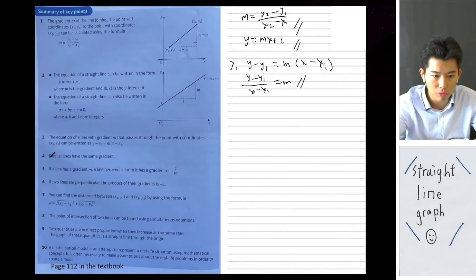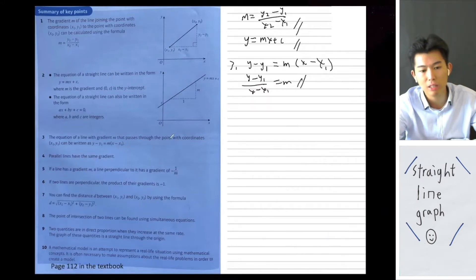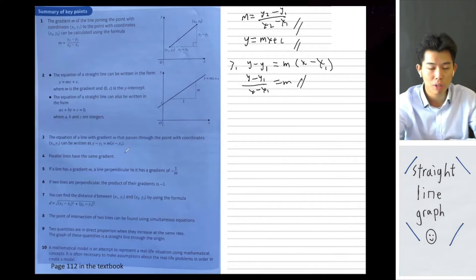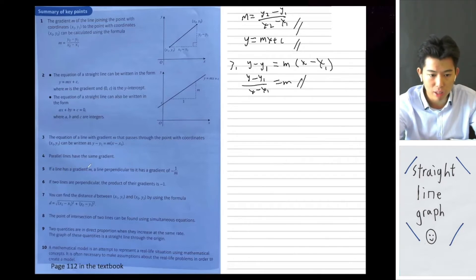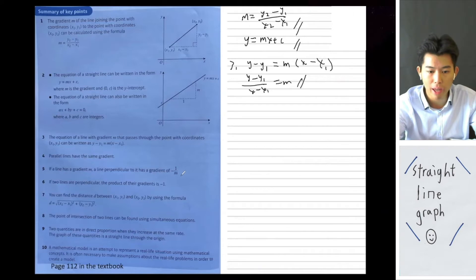For part 4, parallel lines have the same gradient — meaning the same slope. For part 5, if a line has gradient m, then the line perpendicular to it has a gradient of minus 1 over m.